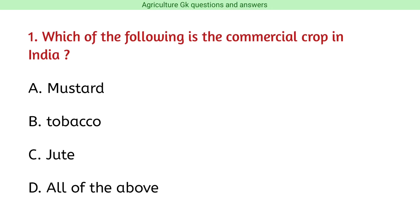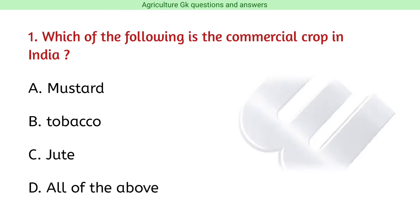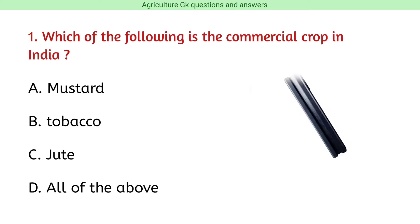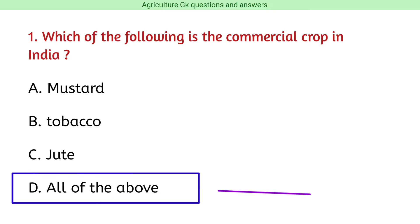Question number 1. Which of the following is the commercial crop in India? The correct answer is option D, i.e., all of the above.